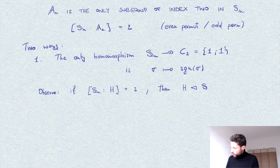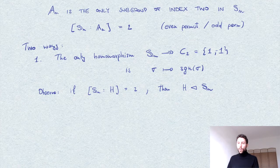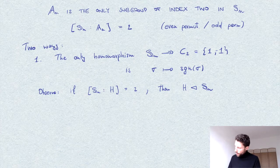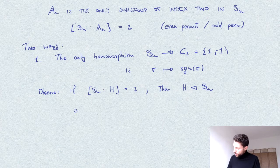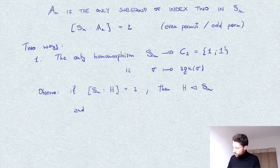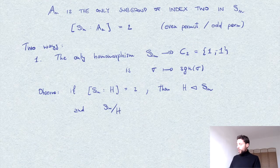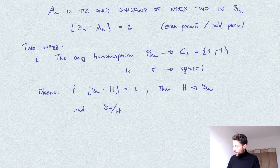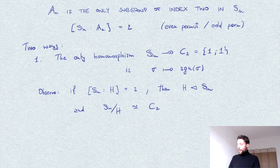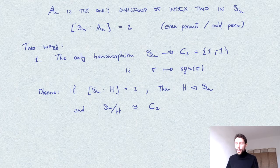So H is normal, and therefore it makes sense to consider the quotient. And of course the quotient consists of the cosets of H, which must be two, and so this is isomorphic as a group to C_2.